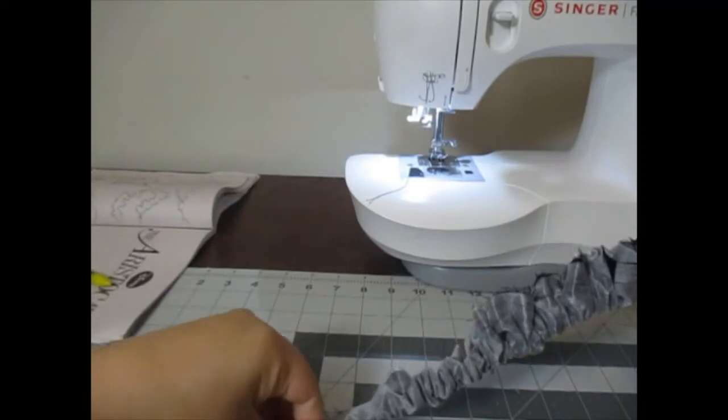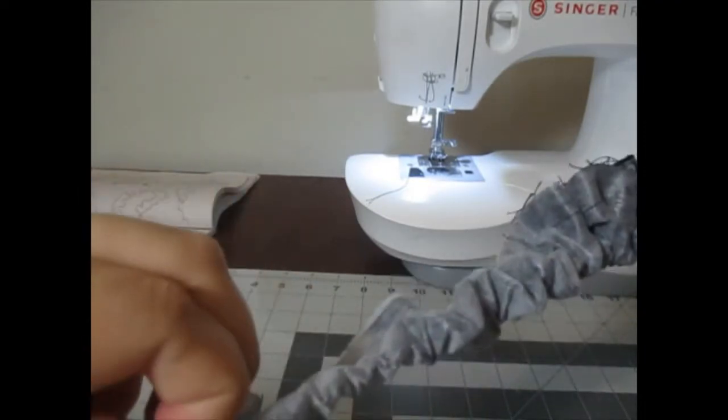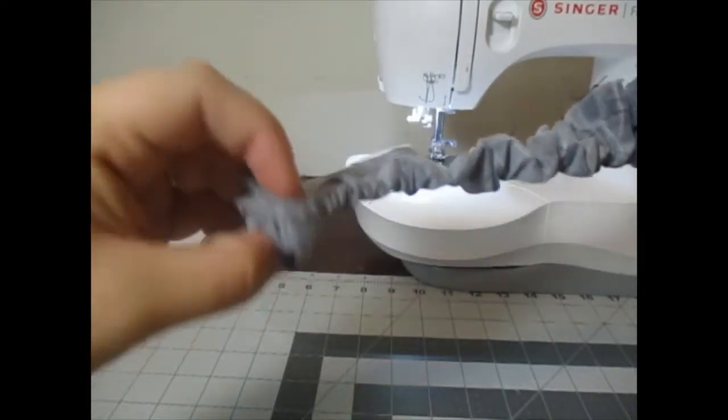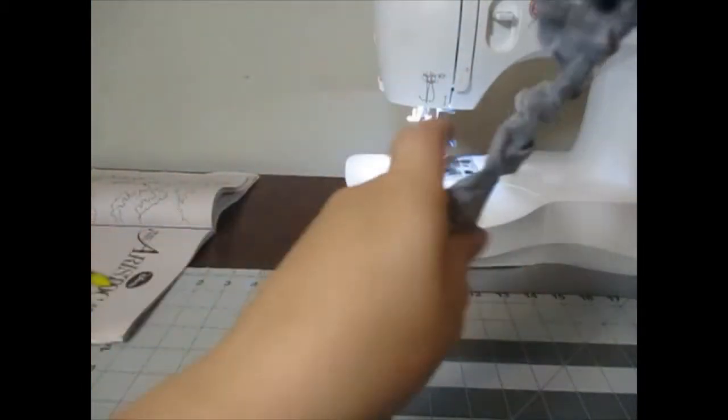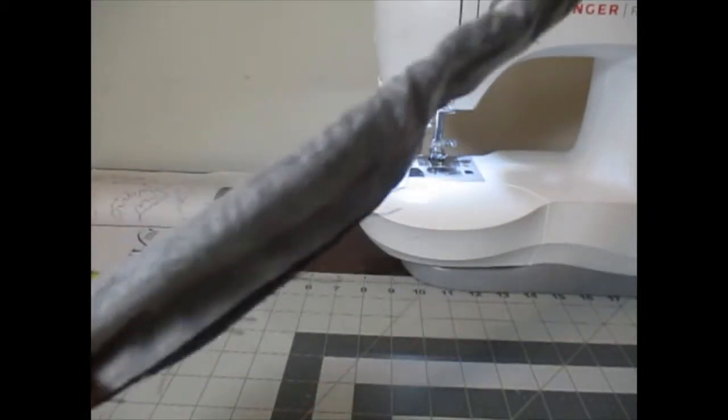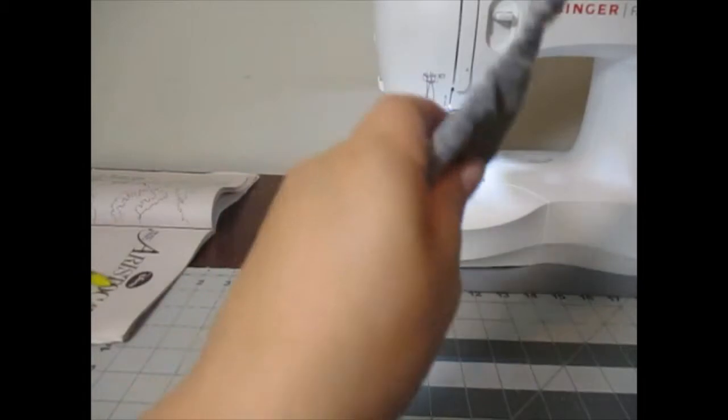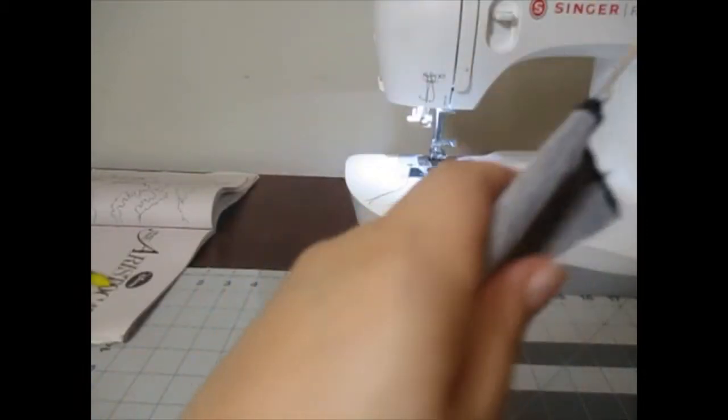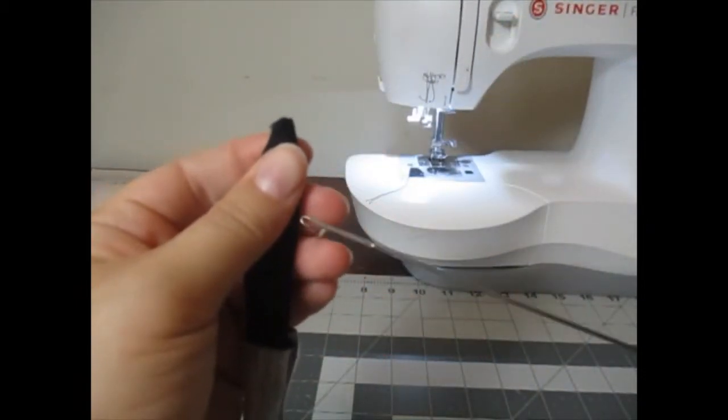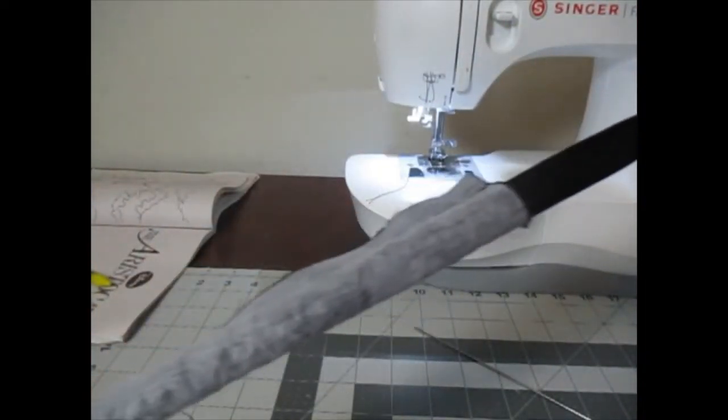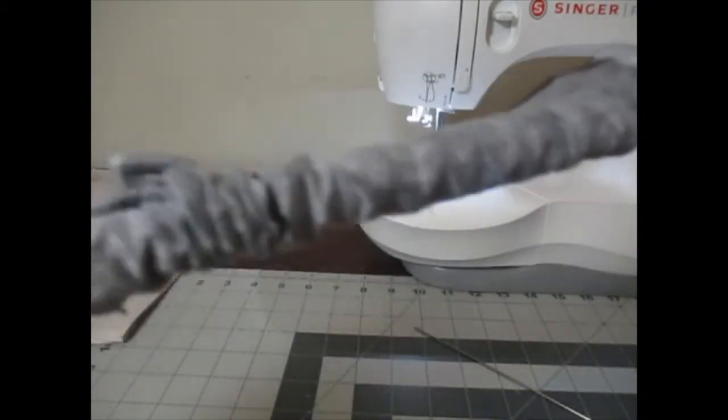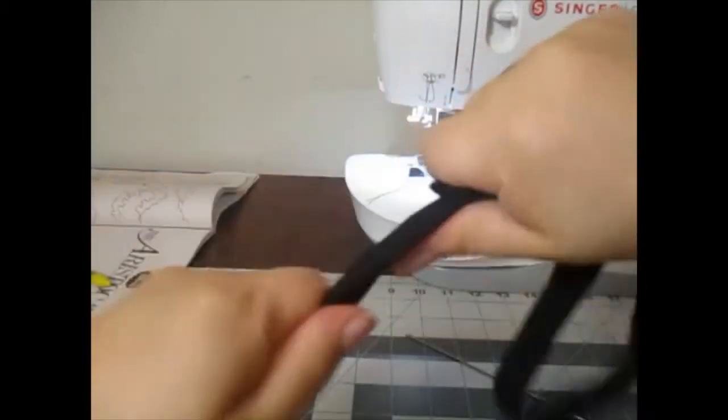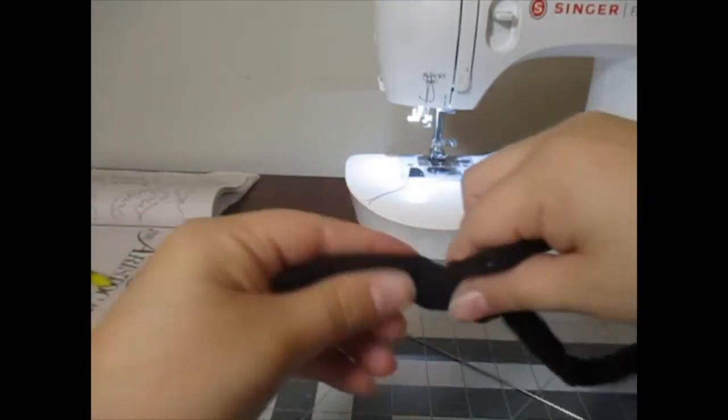So you just take the hook on the end and hook it over the edge of the fabric like that and start pulling. Now you're going to need to help the fabric turn, especially on this one that is thin. Once it gets started, you can start pulling it through. Now be careful—I have ripped loops before. That's not fun. So be gentle with this. You don't want to go too crazy. And pull it through until it's all the way through. There you go.